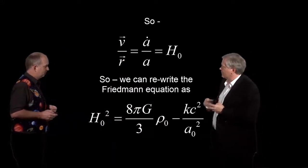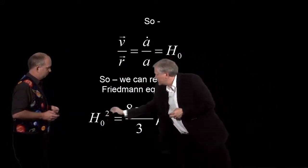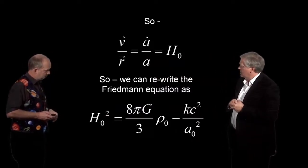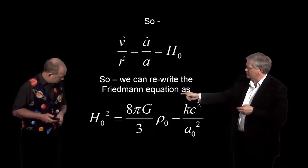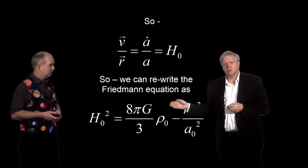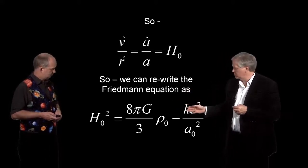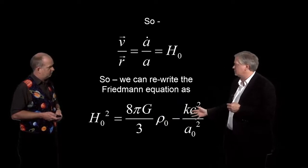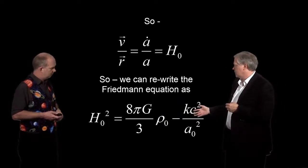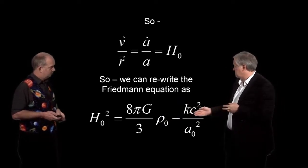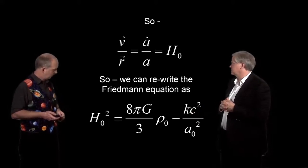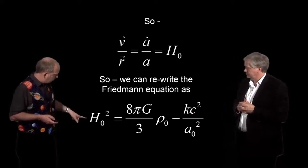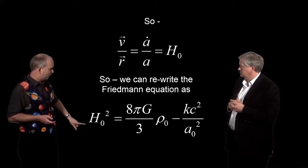So there we've used the fact that a dot over a squared was on that side of the equation on the previous slide. So how fast the universe is expanding right now is going to be related to the density, and then something to do with the size and the curvature. But one could imagine that the universe we live in has no curvature, for example.